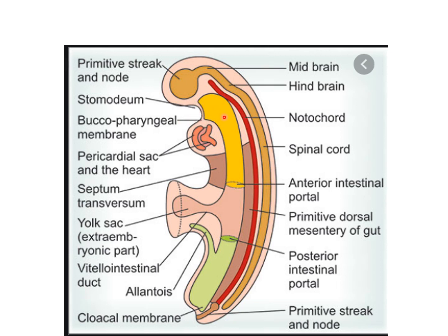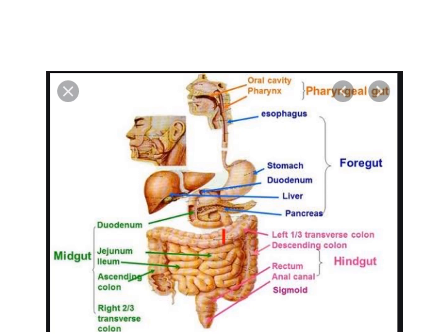The primitive gut includes the pharynx, esophagus, stomach, and up to the second part of the duodenum — these are foregut derivatives. The midgut is connected anteriorly with the yolk sac and is derived from the second part of the duodenum, through the opening of the bile duct, down through the duodenum, ileum, cecum, appendix, and part of the ascending colon. The hindgut includes the remaining transverse colon, descending colon, rectum, and anal canal.